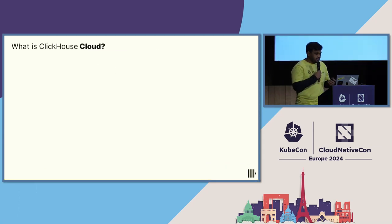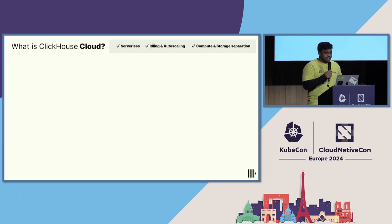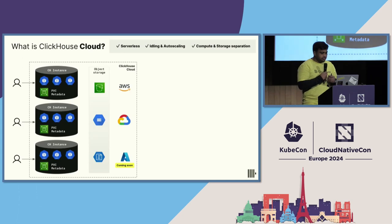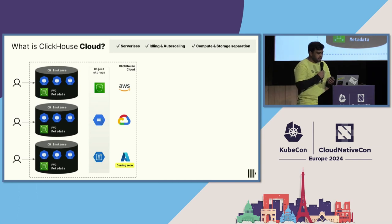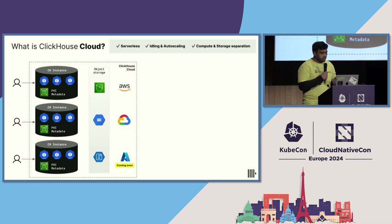What is ClickHouse Cloud? ClickHouse Cloud is the serverless offering of ClickHouse. It has features such as idling and auto-scaling so you can bring down your compute when there's no activity on the cluster, and auto-scale when there are workload spikes. We also have compute and storage separation so you can scale compute independently of storage. Under the hood, we use Kubernetes as a compute layer and object storage for data persistence. We're currently available on AWS and GCP, and pretty soon Azure as well.